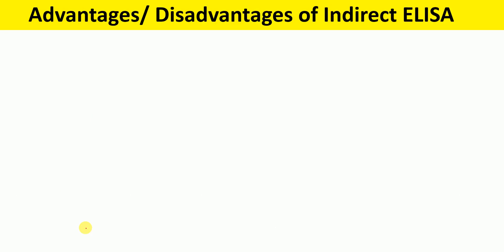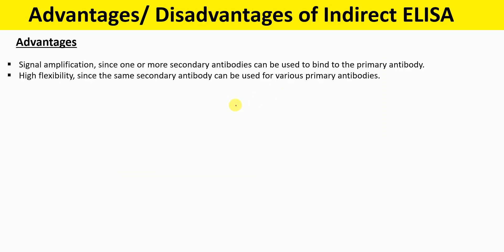What are the advantages and disadvantages of indirect ELISA? The advantages are signal amplification, because one or more secondary antibodies are used to bind the primary antibody. High flexibility, because the same secondary antibody can be used for various primary antibodies.